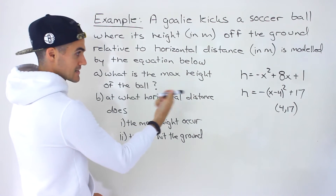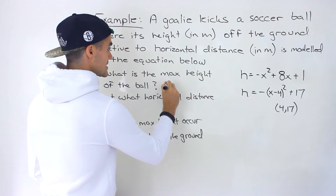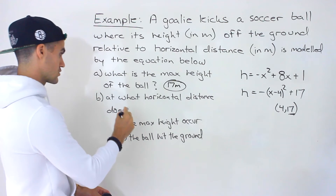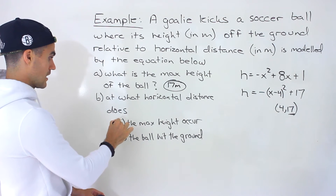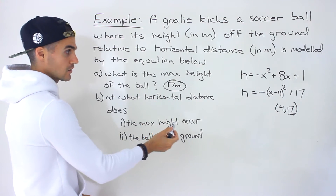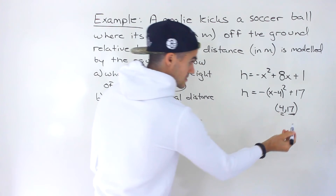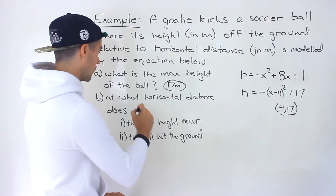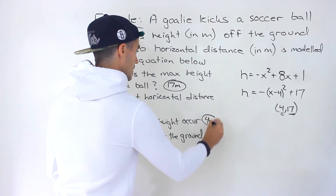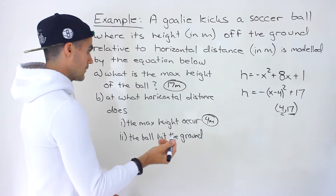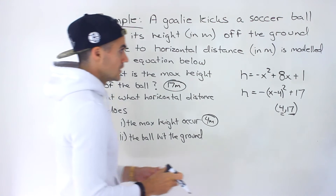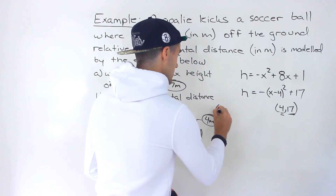So part A — what is the max height of the ball? It's going to be 17 meters, which is that h part of the vertex. And this also answers the first part of part B: at what horizontal distance does the max height occur? The maximum is occurring at a horizontal distance of 4 meters. We could actually make a fairly accurate graph at this point.